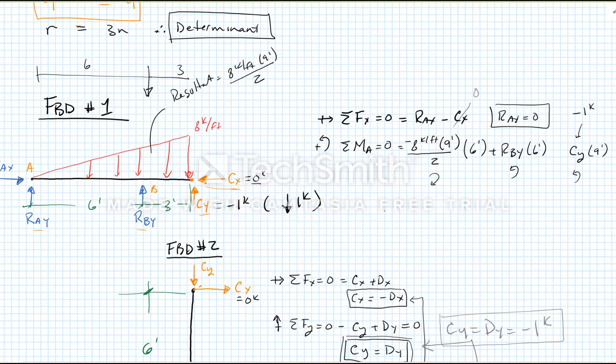I end up with zero equals minus eight times nine times six over two. That's kips per foot, that's feet and that's feet. Plus, that's a negative, plus six RBY minus one kip times nine feet. That was a plus the way we were drawing it, but the negative comes from the negative one.